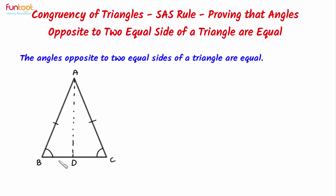Now, in triangles ABD and ACD, we will have AB is equal to AC, given. AD is the common side, so it is a side of triangle ABD and also triangle ACD. According to the SAS rule, we need the included angle. The included angle for these two sides can be angle BAD and angle CAD. Are they equal? These two angles can be made equal if we construct AD as the angle bisector of angle BAC. This is our way of making sure that angle BAD and angle CAD are equal.